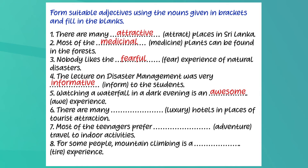Let's check the sixth one: 'There are many blank luxury hotels in places of tourist attraction.' Luxury is a noun, and we have to form an adjective. The adjective is 'luxurious'. The answer is: There are many luxurious hotels in places of tourist attraction. The suffix needed is '-ious', and when you add this suffix, there is a spelling change too, as you would have noticed.